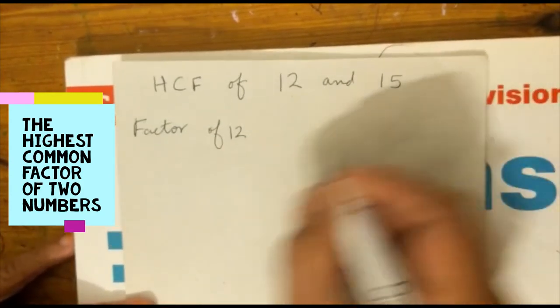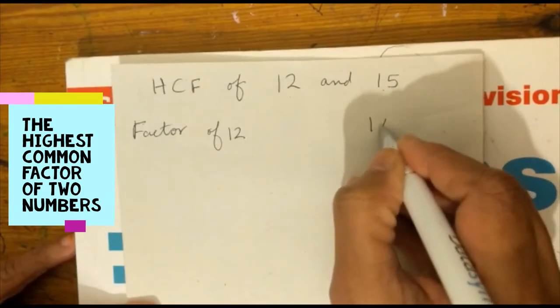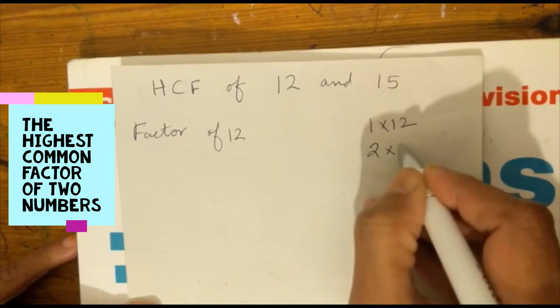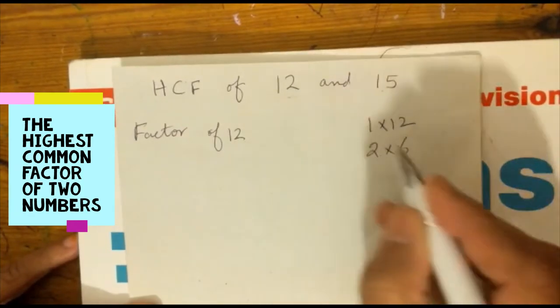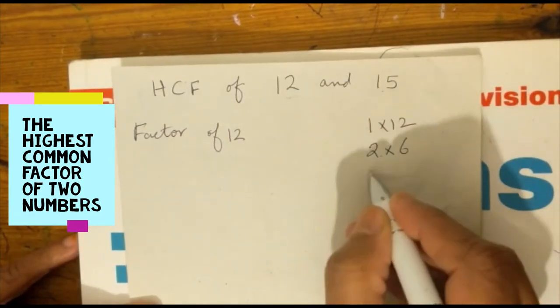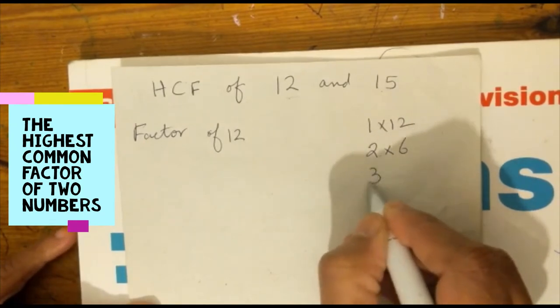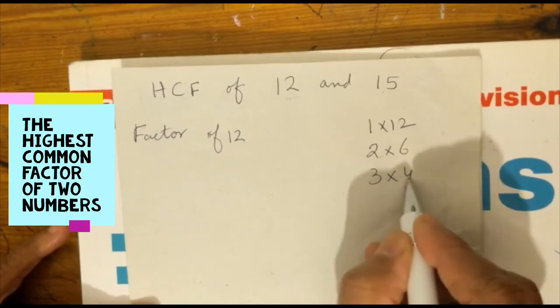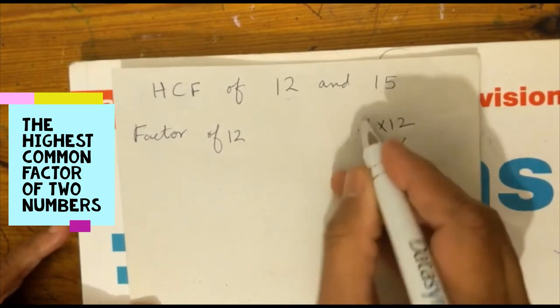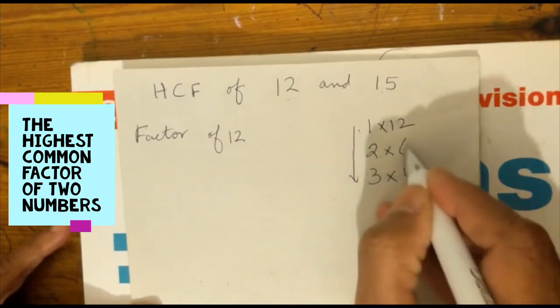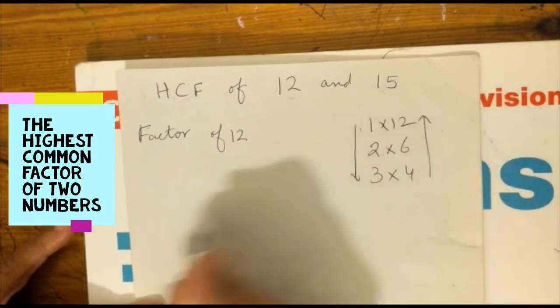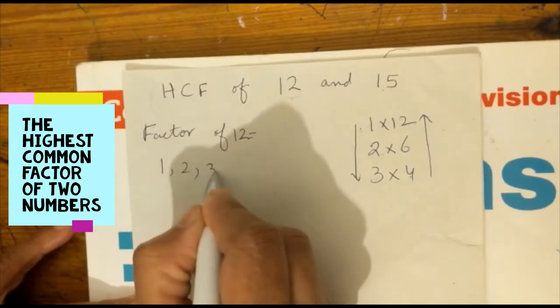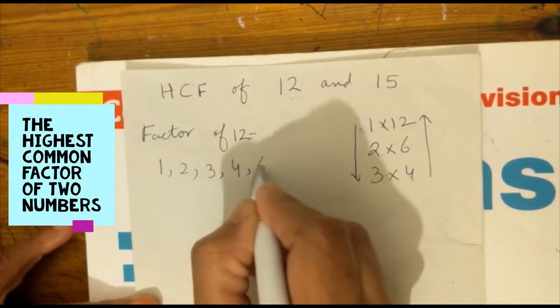Factor of 12: find the way that 1 times 12 equals 12, then 2 times 6 equals 12, then 3 times 4 equals 12. The factors of 12 are 1, 2, 3, 4, 6, and 12.